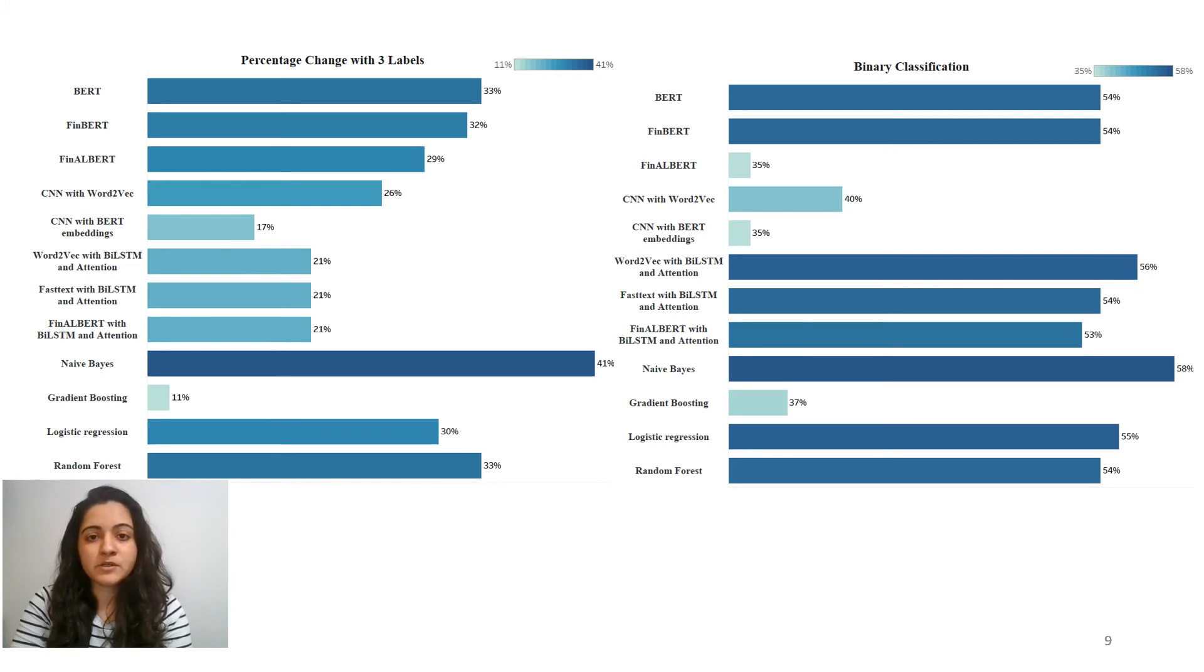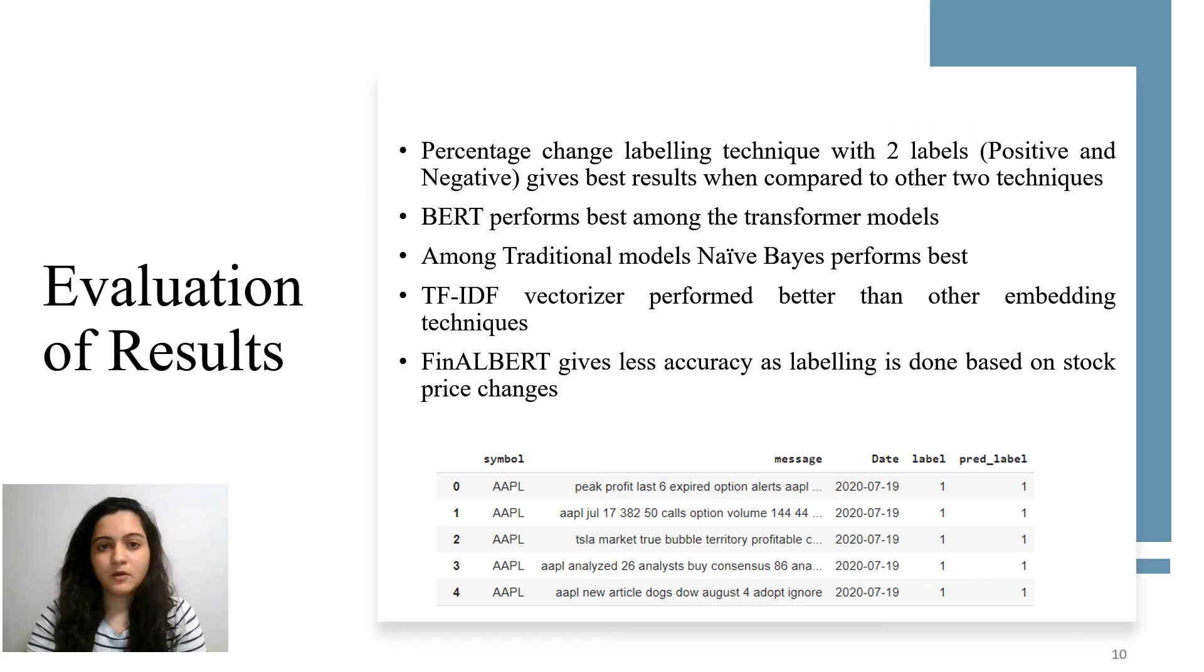On the right side of the screen, we see the results of all models with data labeled using binary classification method. Here also, Naive Bayes model gives the best result when compared to other models with F1 score as 58%. And logistic regression method gives the second-best result with F1 score as 55%. In word embeddings with neural networks, Word2Vec with BiLSTM performs well with F1 score as 56%. While in transformer-based methods, BERT and Naive Bayes models give the best result when compared to the other two techniques.